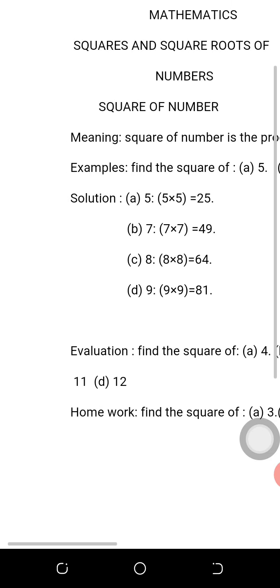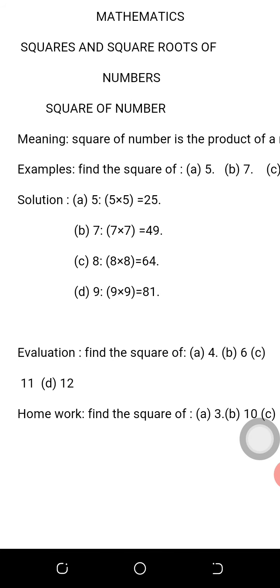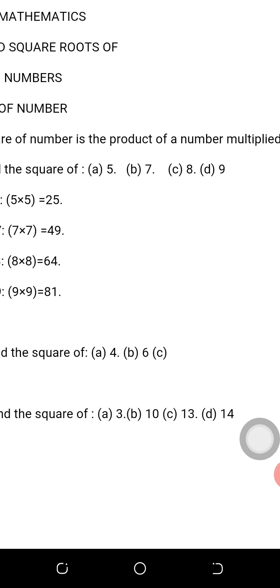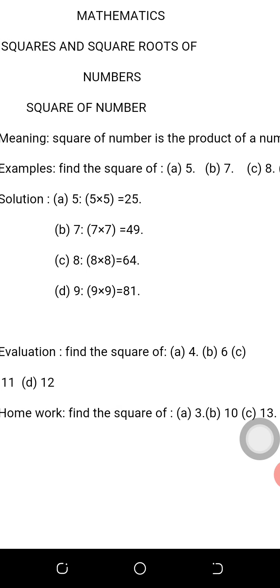So you don't need to stress yourself concerning the square of number - it is very simple, provided you follow the definition that is given to you. So once again, the definition is the product of a number multiplied by itself. That is the definition of square of number.